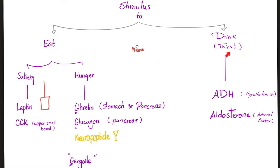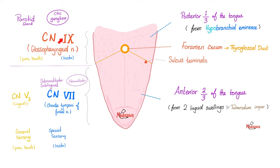Next, let's talk about being thirsty. If you lost pure water, ADH will go up. It will try to reabsorb the water back again in the kidney and tell you to drink water. Aldosterone is similar, but aldosterone does not care about water only — it cares about water and sodium. The nerve supply of the tongue was discussed before.